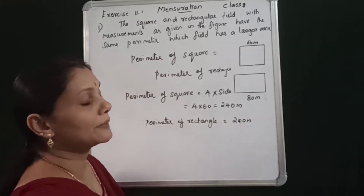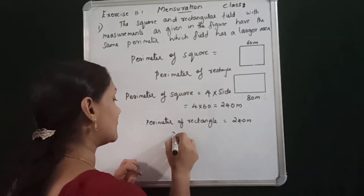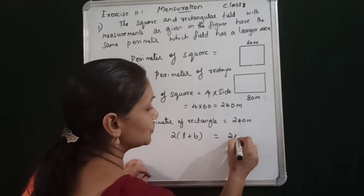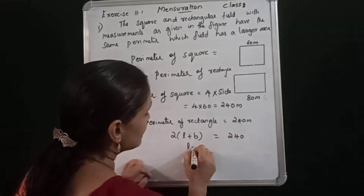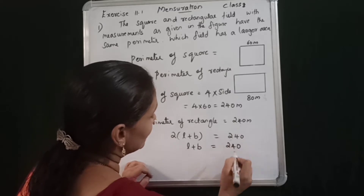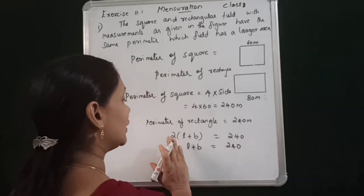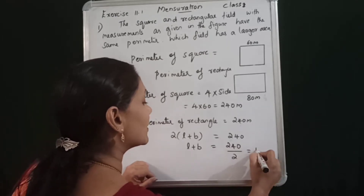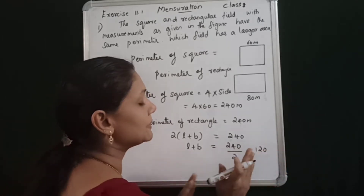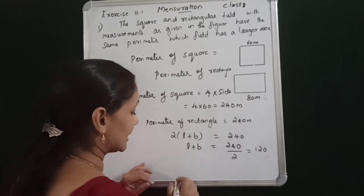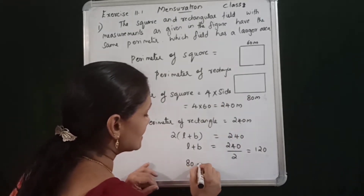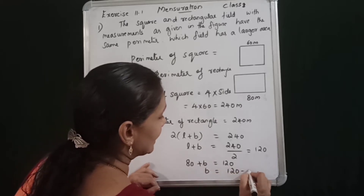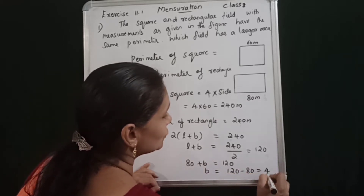For the rectangle perimeter: 2 into L plus B equals 240. So L plus B equals 120. Given L is 80, then 80 plus B equals 120, so B equals 120 minus 80, which equals 40.